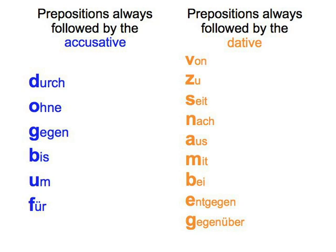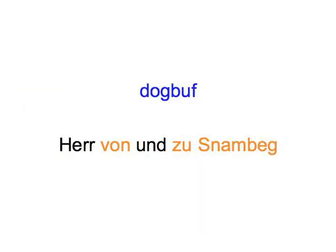And some that are always followed by the dative: von, zu, seit, nach, aus, mit, bei, entgegen, gegenüber. You probably know these off by heart. You may remember them by using the mnemonics dog-boof for the accusative and herfonensel-snumbeck for the dative.